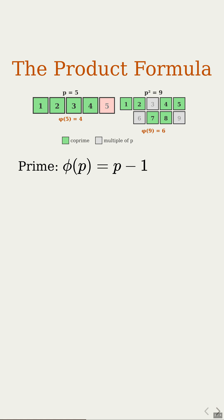Next, take a prime power n equals p to the a. The only bad guys are the multiples of p. How many multiples of p are there up to p to the a? They look like p times 1, p times 2, all the way up to p times p to the a minus 1. So there are p to the a minus 1 of them.